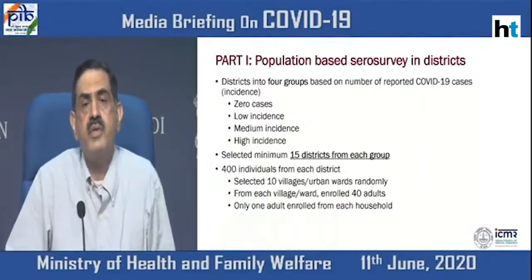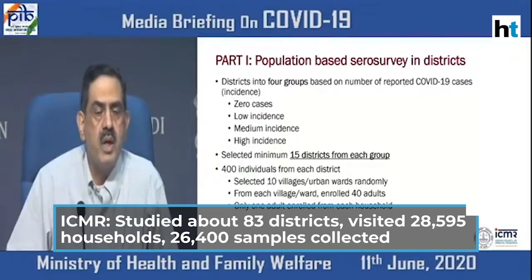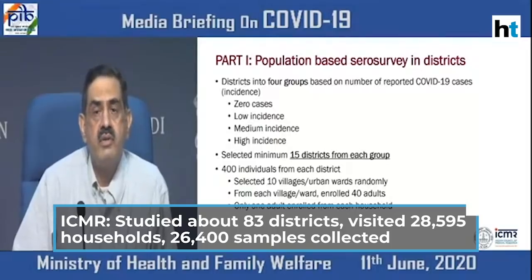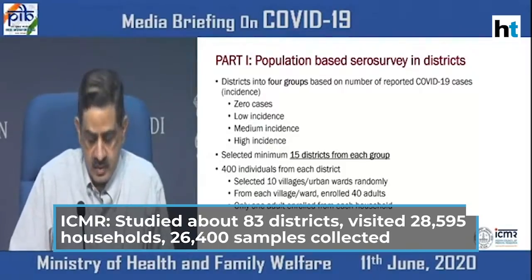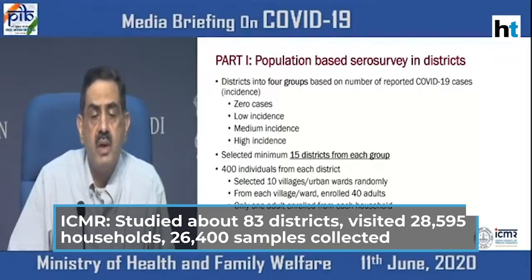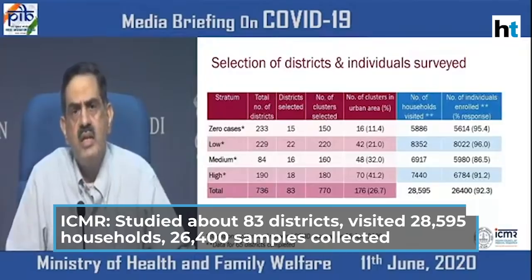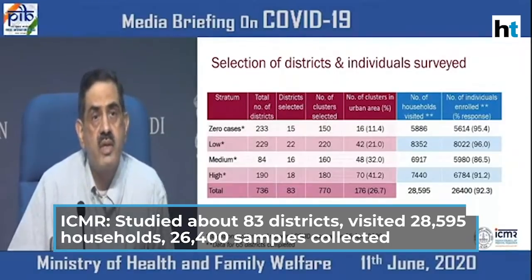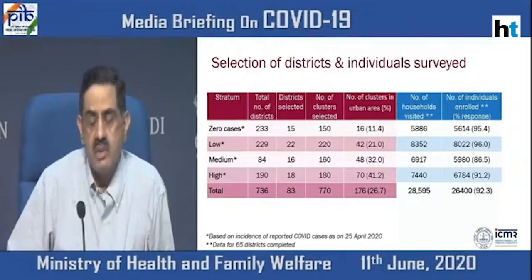In Part 1 of the survey, which is complete, this was a population-based serosurvey in which several districts were studied and divided into four groups based on RT-PCR prevalence: zero, 0 to 5%, 5 to 10%, or more than 10% per million cases. Fifteen districts were in each group, and 400 individuals were studied from each district. From each village or urban area, 10 villages were selected and 40 adults per village, with one adult per household. We studied about 83 districts, visited 28,595 households, and collected data from 26,400 individuals.